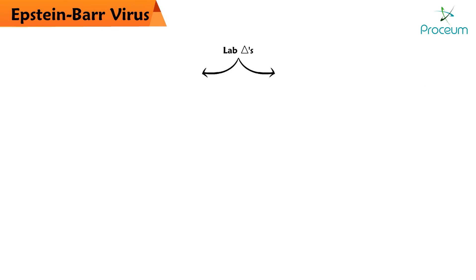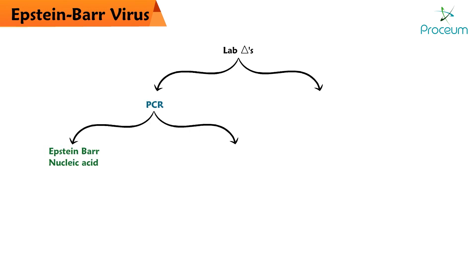Lab diagnosis. Polymerase chain reaction (PCR) for Epstein-Barr nucleic acid and for viral capsid antigen. Enzyme-linked immunosorbent assay (ELISA) for Epstein-Barr virus.